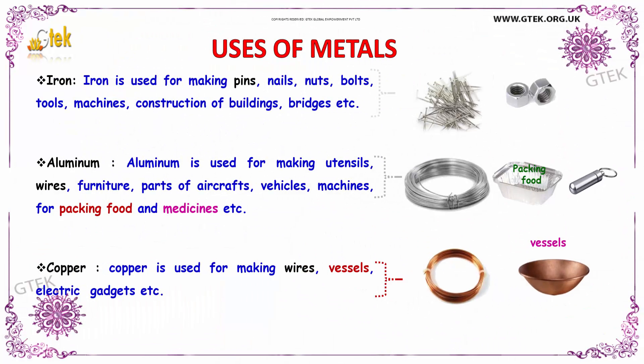Now let us see the uses of metals. Iron is used for making pins, nails, nuts, bolts, tools, machine constructions, construction of buildings, bridges, etc. Aluminum is used for making utensils, wires, furniture, parts of aircraft, vehicles, and machines for making or packing food and medicines.